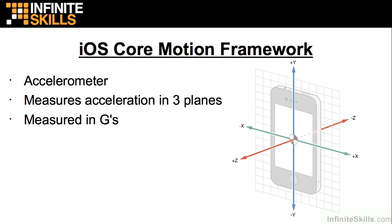The accelerometer measures acceleration, and it measures it in three planes. You can consider X and Y to be left and right, so if the user is shaking the device from left to right, there will be accelerometer readings in those directions. The Y axis goes up and down. The Z axis essentially points from the screen directly to you looking at the screen, and in the negative direction, points out away from the phone.